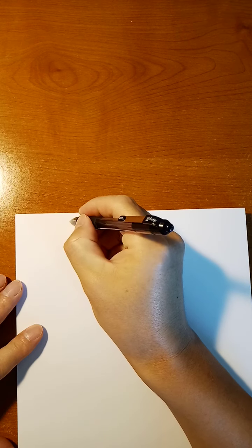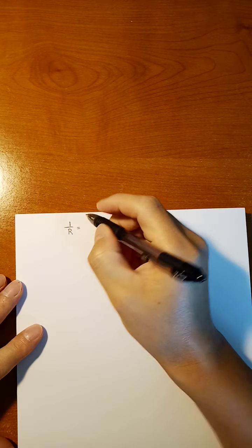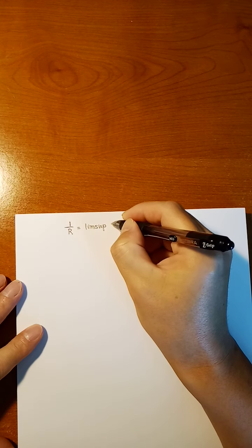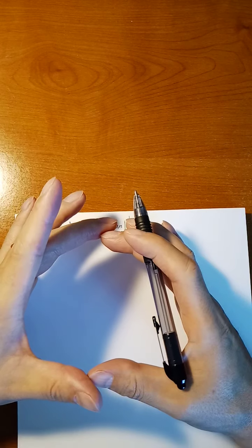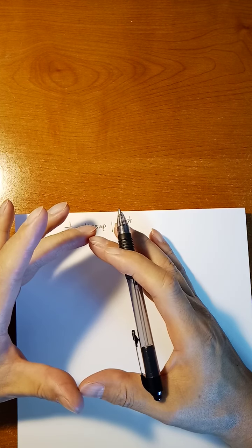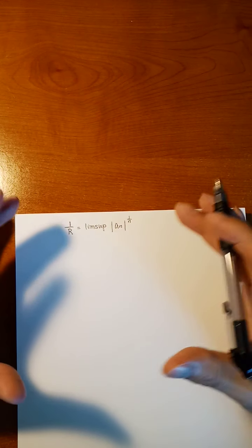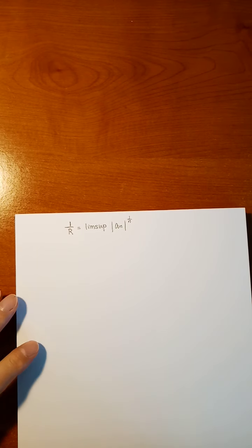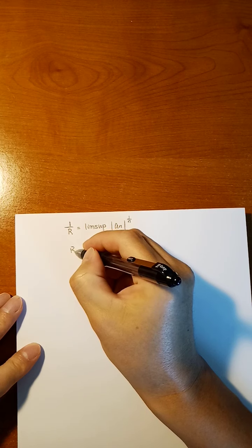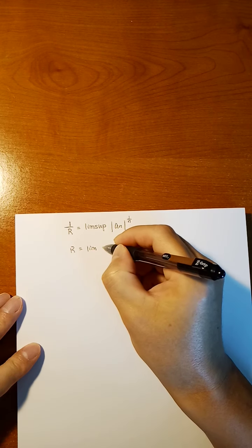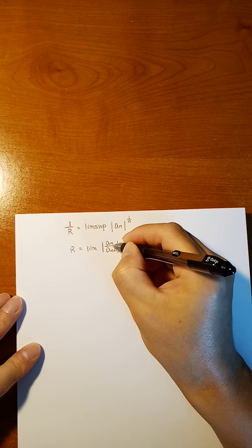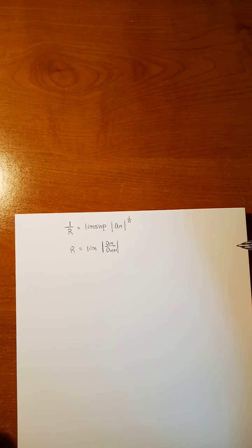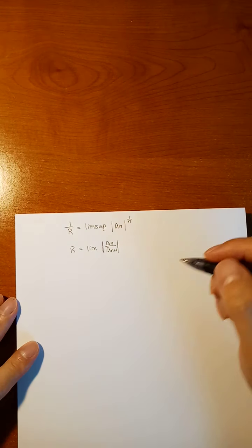Let's continue. Last time we defined the radius of convergence. When the disk is smaller with radius less than capital R, the series is absolutely convergent. Once outside of the radius R, it is divergent. We also have a computational formula: the radius of convergence equals the limit of |a_n / a_{n+1}|.